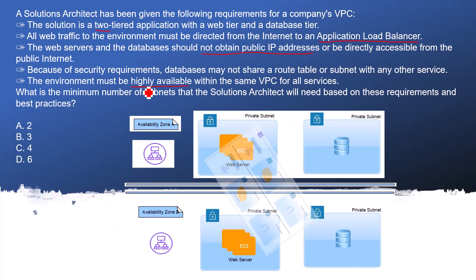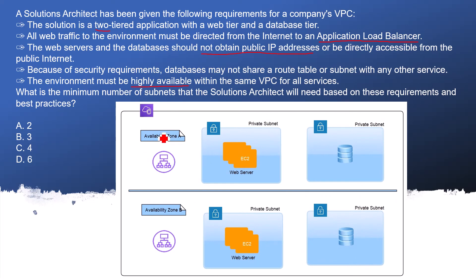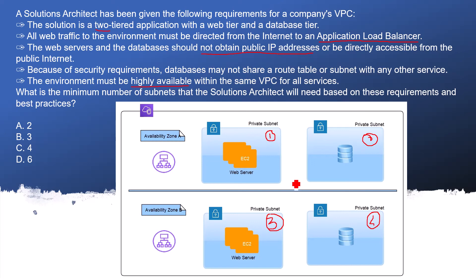The same set of subnets we need in another availability zone. So the final diagram shows availability zone A needs one private subnet for the web server and one subnet for the database - that is two subnets. To provide high availability, all of this should also be available in another availability zone, so we need a third and fourth subnet. That means a minimum of four subnets are required.